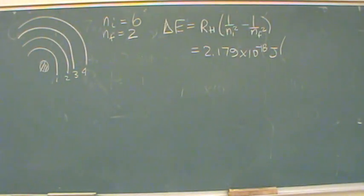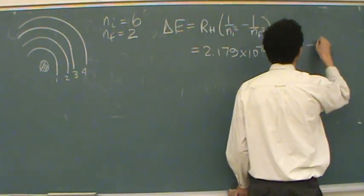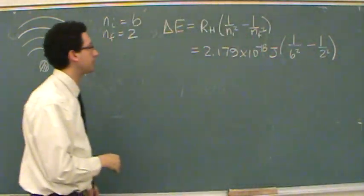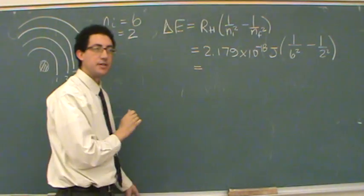And then its initial starting place is six. So we'll go one over six squared minus one over two squared. And I'll have one of you calculate this so you can actually see the numbers. And this will get us energy.